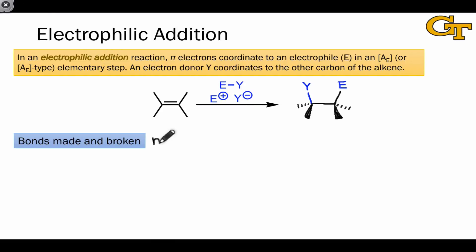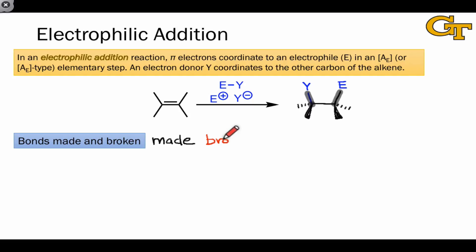Let's look at bonds made and broken. Bonds made in the products include a bond between one carbon of the original alkene and the electrophile, as well as a bond between the other carbon and Y, the partially negative or anionic group that comes along with the electrophile. Bonds broken in the starting material include the pi bond between the alkene carbons, as well as the bond linking E and Y in the reagent if one exists. For some electrophiles, the reagent is better imagined as E+ Y−, an ionic compound where a covalent bond isn't really broken per se, but in general E and Y will be linked to each other.